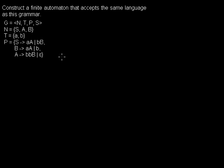I'd like to show you how to convert a right linear grammar into a finite automaton that accepts the same language.